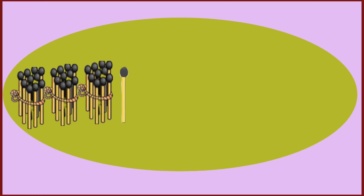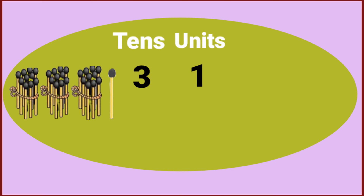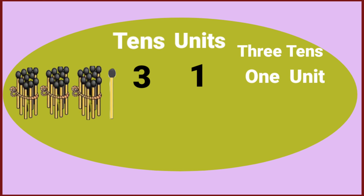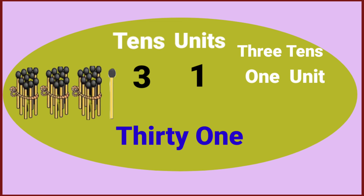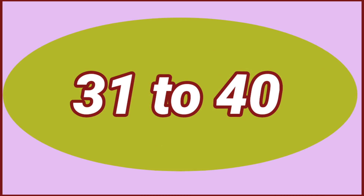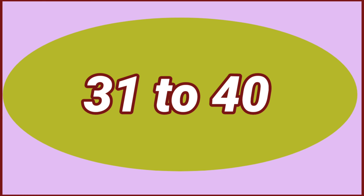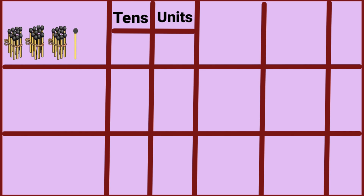Three bundles and one stick make three tens and one unit. Three tens and one unit is equal to thirty-one. Thirty-one to forty: three tens, one unit.